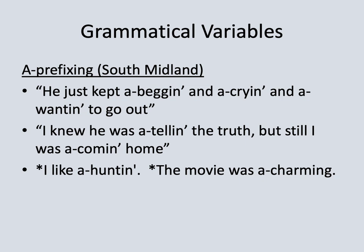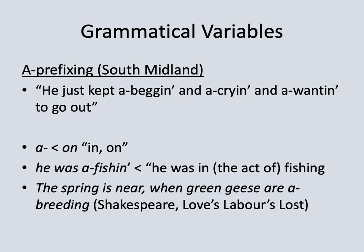A-prefixing is restricted — it's not used with just any -ing form. You can't use it with gerunds, so you can't say I like a-huntin'. And you can't use it with -ing words that have become adjectives, so you can't say the movie was a-charmin'. Historically, the a-, which has fused to become a prefix, was originally a separate preposition with the form on, meaning in or on. So a phrase like he was a-fishing originally comes from something meaning he was in the act of fishing.